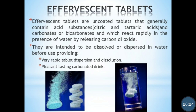In the previous lecture we stopped at this point, so now we will continue. The next type of tablet is effervescent tablets. Effervescence is the formation of bubbles due to the evolution of carbon dioxide. Effervescent tablets are uncoated tablets that generally contain acid substances like citric acid and tartaric acid, and carbonates or bicarbonates, which react rapidly in the presence of water by releasing carbon dioxide.